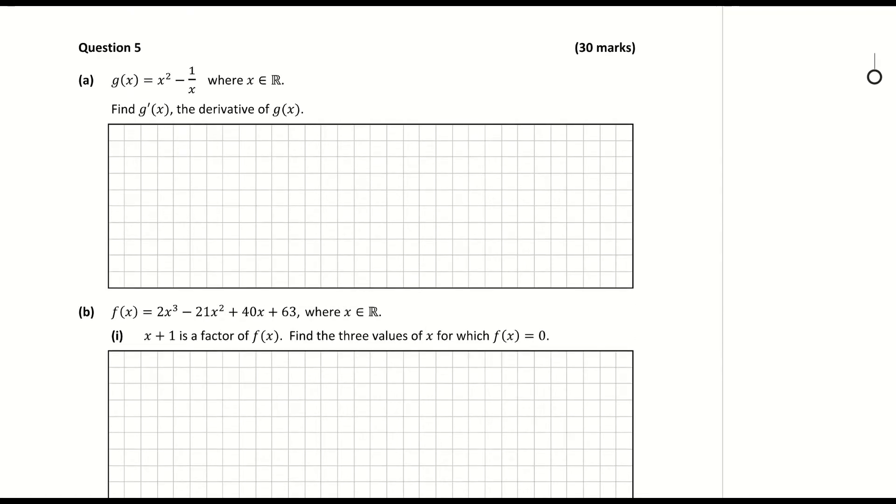Question 5a. G of x is equal to x squared minus 1 over x. Find g dash of x, the derivative of g of x. So our function here, g of x, let's just write it down, is equal to x squared minus 1 over x.